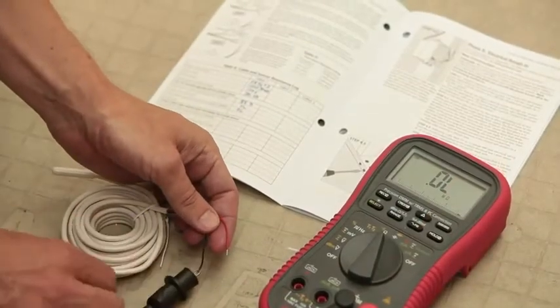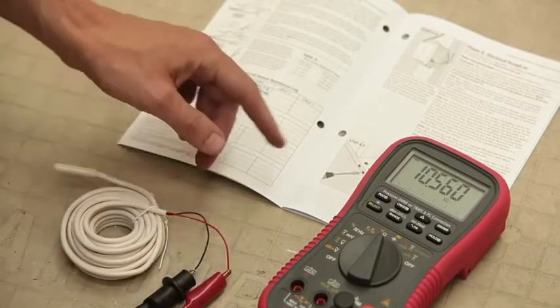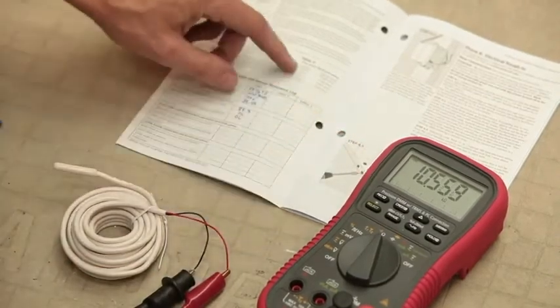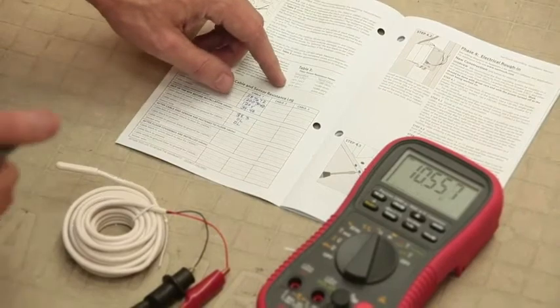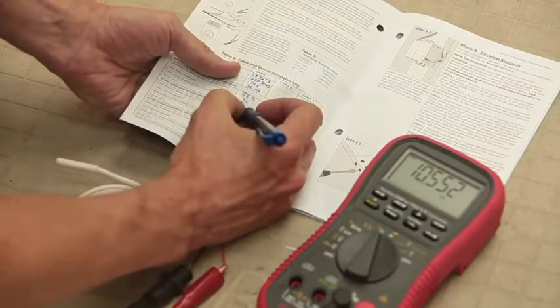Change the meter to the 20,000 ohm range to test the sensor wires. Place a test lead on each wire. Look up the resistance in the floor sensor resistance chart from the manual to see if the number is appropriate for the temperature in the space where you're testing.